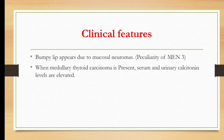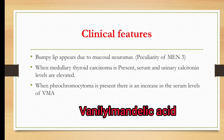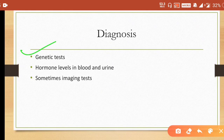When medullary carcinoma of the thyroid is present, serum and urinary calcitonin levels are elevated. When pheochromocytoma is present, there is an increase in serum level of VMA (vanillylmandelic acid). Affected individuals have a tall, lanky Marfanoid body type with long extremities, a narrow face, and muscular wasting.